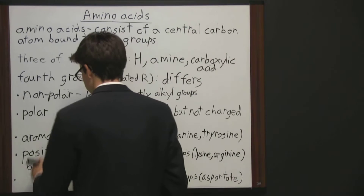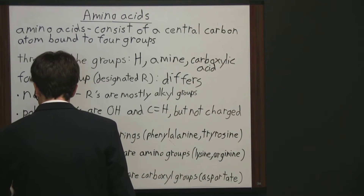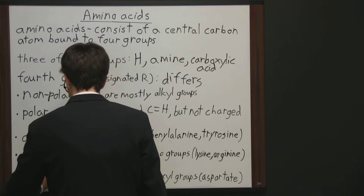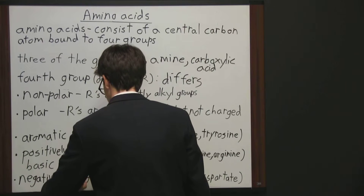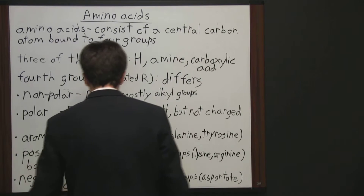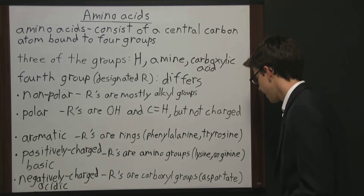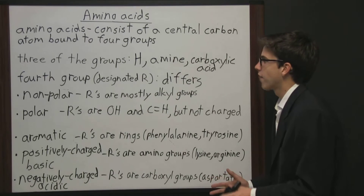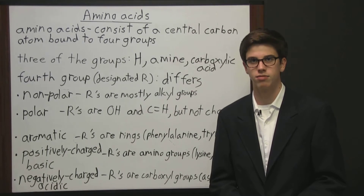The fifth and final group is the opposite — negatively charged, or the acidic group. Here the R groups are carboxyl groups, and an example is aspartate. That covers the five different classifications of amino acids.